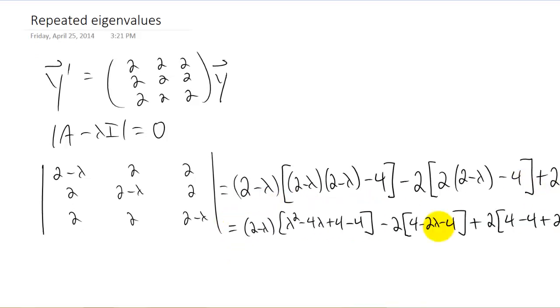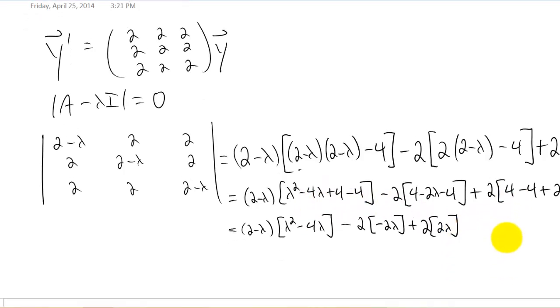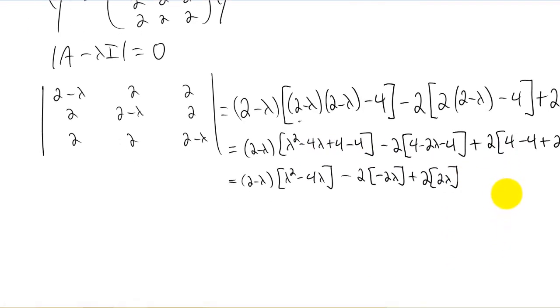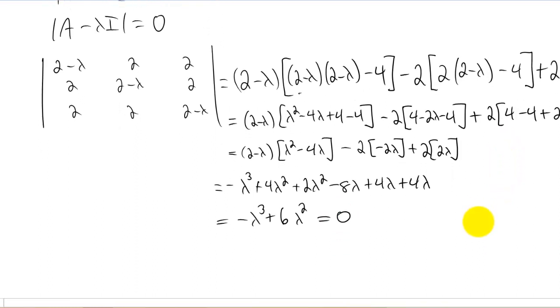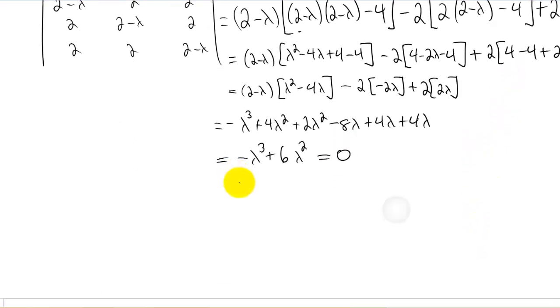Now I'm going to simplify. I'm distributing out what is inside of all of these parentheses and now I'm going to cancel what I can. Now it looks like we're going to have to foil a few things out and we're going to set this thing equal to zero. Okay so we set the determinant equal to zero. Now I'm just going to factor out a negative lambda squared and we get our three eigenvalues but two of them are the same. So we have a repeated eigenvalue right here of zero.